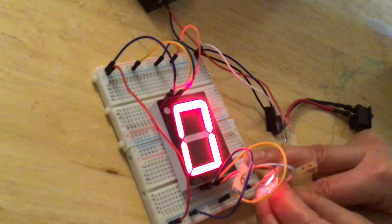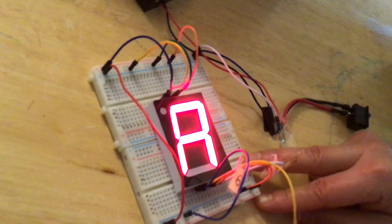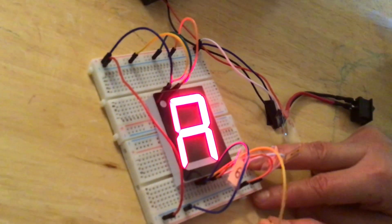How do you make an A out of this? Let's remove another wire. Oh, that's an A. That's how a seven-segment digit works.